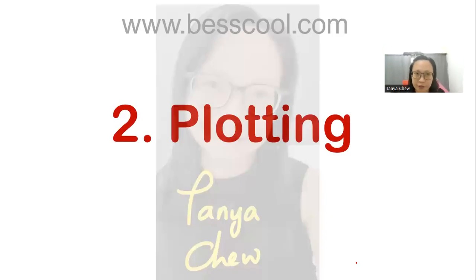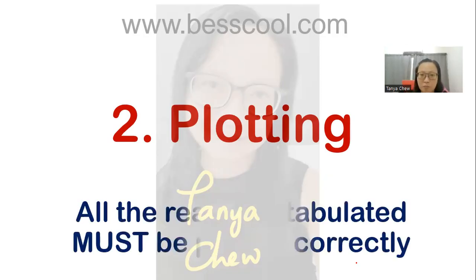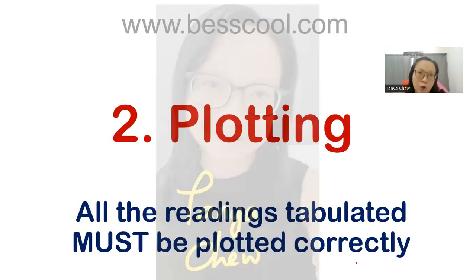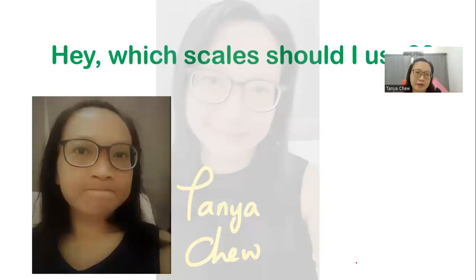Tip number two is related to plotting. Before you plot a graph, a table will be given with numbers, or you are asked to do some calculation before plotting the graph. Whether the numbers are given or you are asked to do a calculation, it doesn't matter — just make sure that all the coordinates are plotted correctly and as accurately as possible on your graph paper. Now, which scale should you use to plot the graph? This is one of the most challenging parts for most students, so I'm giving you extra tips on how to determine your scale.